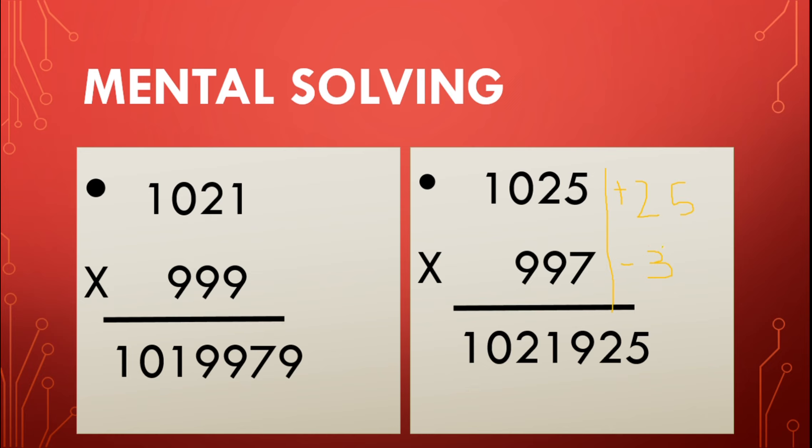The second part is 25 into minus 3. So 25 into 3 is 75, and minus sign would be there. Now we would write it as 1,022 minus 75, but this is not possible. So what we would do? We would do left hand side into base, means 1,000 into 1,022.